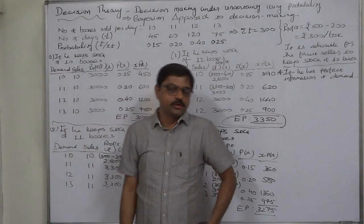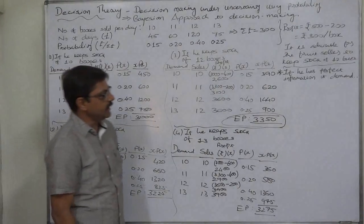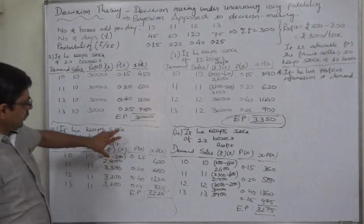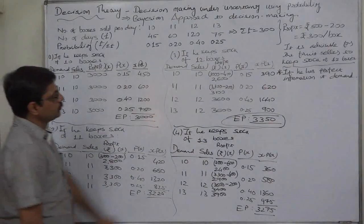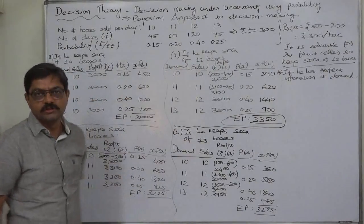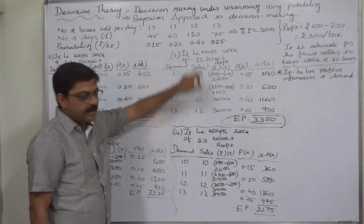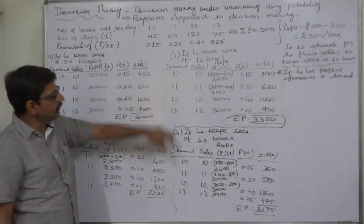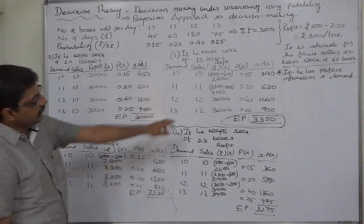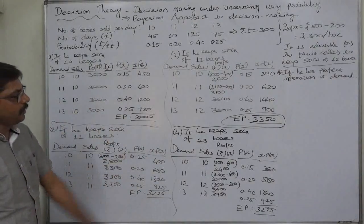Welcome back to part 2 of the solution of the fruit seller problem. In part 1, we concluded that it is advisable for the fruit seller to keep a stock of 12 boxes daily. His demand will be either 10, 11, 12, or 13 boxes. After accounting for loss on unsold boxes, he can make an average profit of Rs. 3350 per day, which is the highest among all available alternatives.